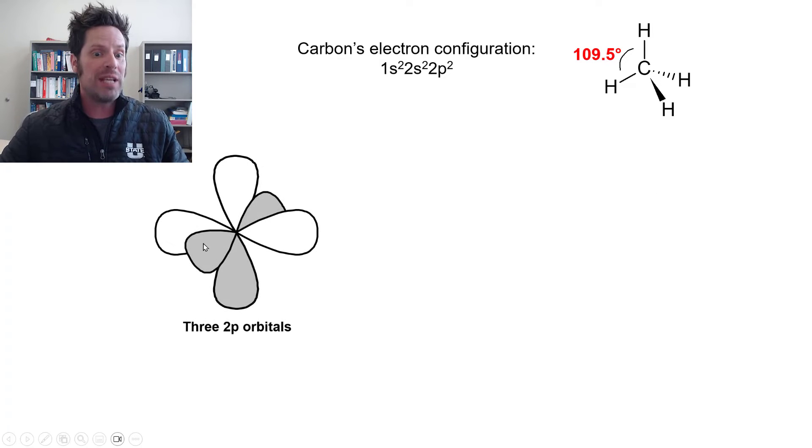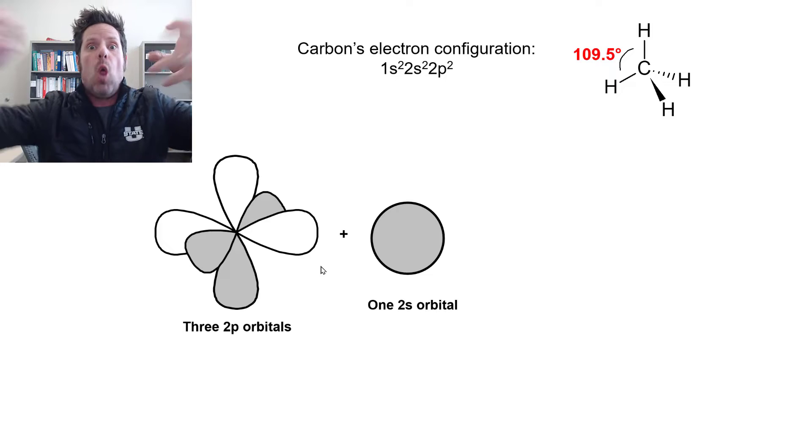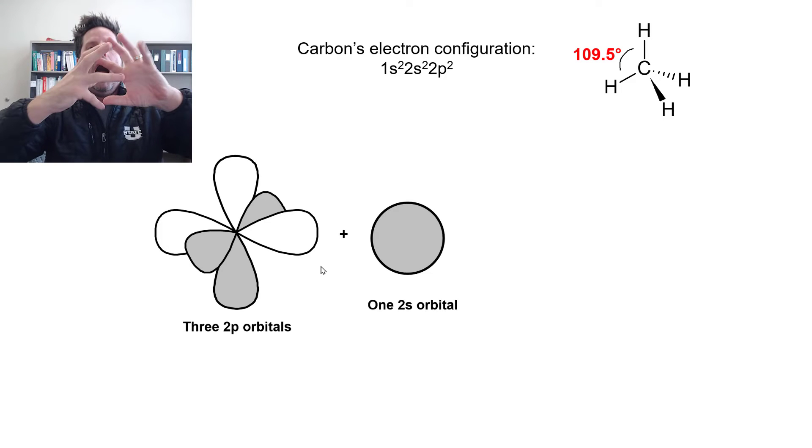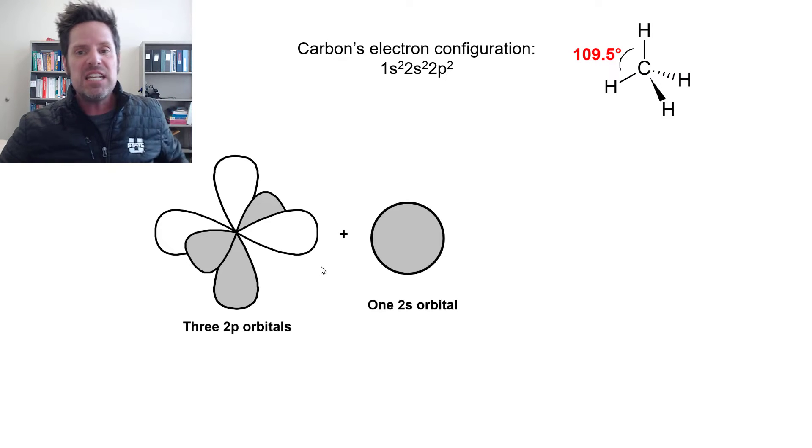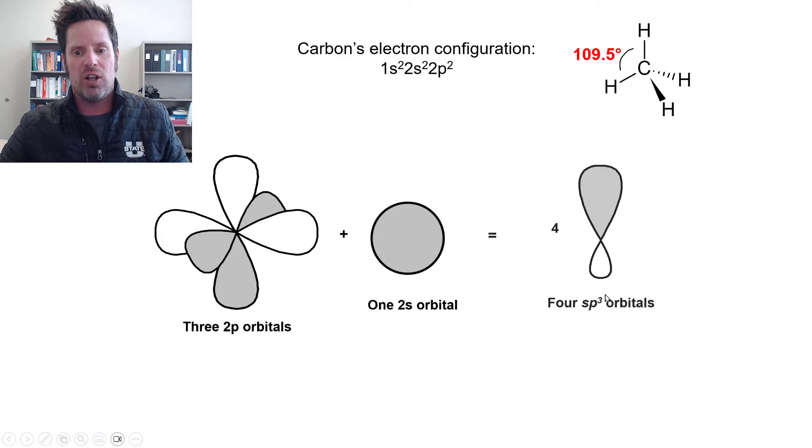The carbon atom will take its three 2p orbitals—it's got a px, py, and pz—and then combines them with its outermost 2s orbital. It combines all of these together and then morphs them into four separate individual new orbitals that are called sp3 orbitals. The reason is because they were made using one s orbital and three individual p orbitals.